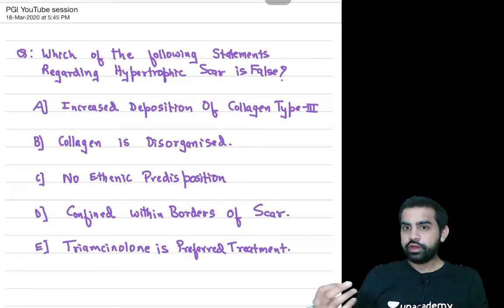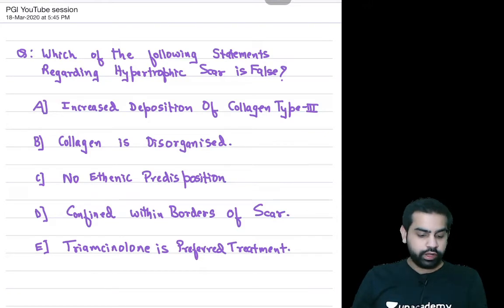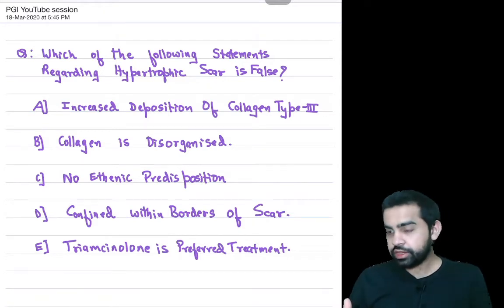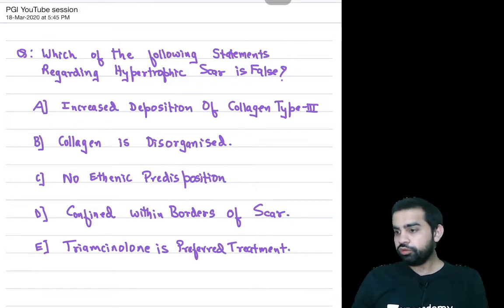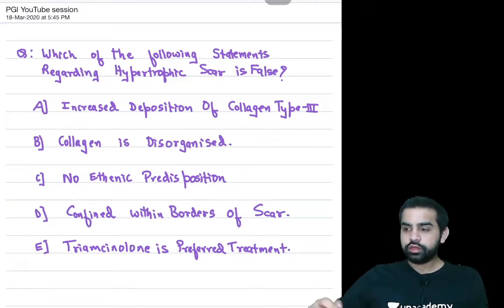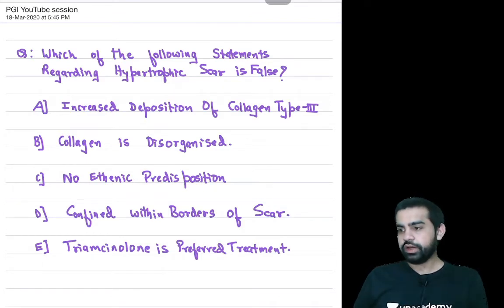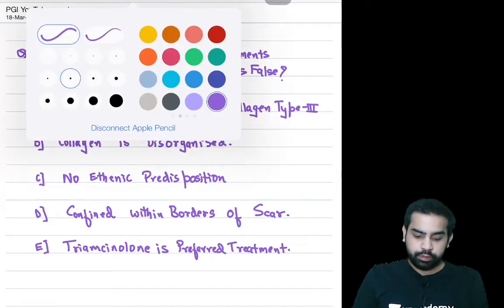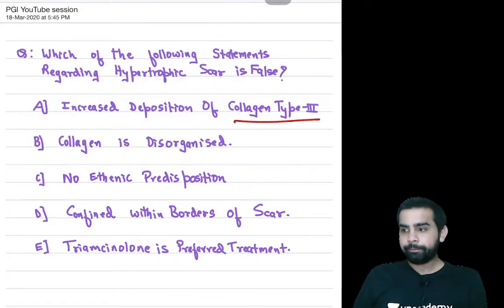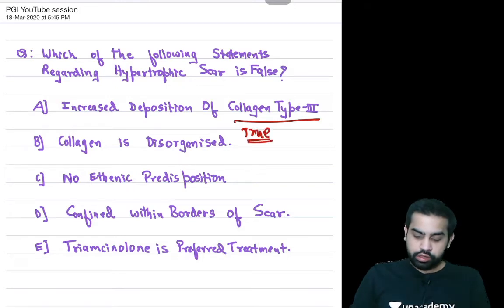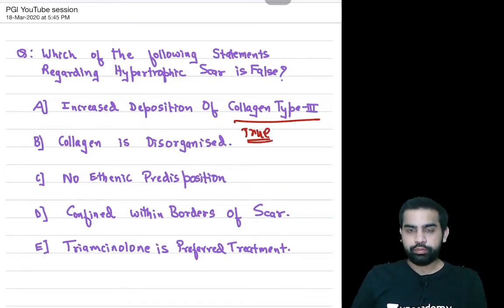Today we are here to talk about the next PGI MCQ session. Which of the following statements regarding the hypertrophic scar is false? Let's take it one by one. Statement A: there is an increased deposition of collagen type 3 — is it true or false? Yes, this is in fact a true statement. There is increased deposition of collagen type 3.